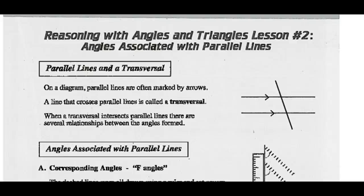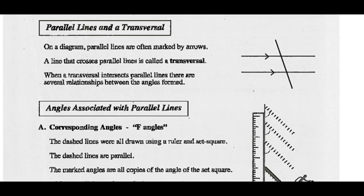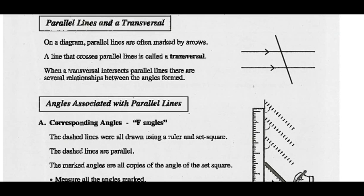Hey Math 20-2s. Today we're going to look at angles associated with parallel lines — parallel lines and a transversal. On a diagram, parallel lines are often marked with arrows. So these two arrows indicate those two lines are parallel. A line that crosses parallel lines is called a transversal. That third line there would be the transversal.